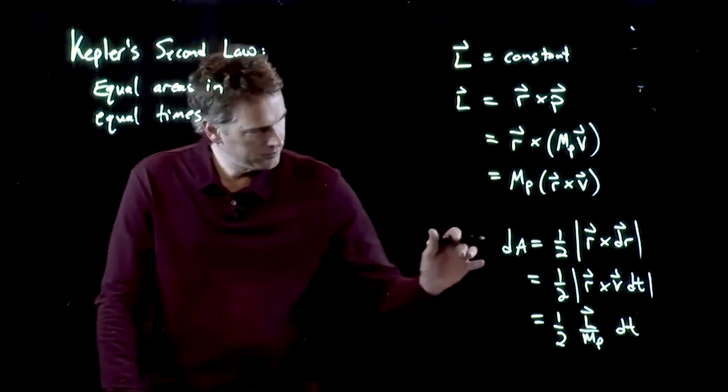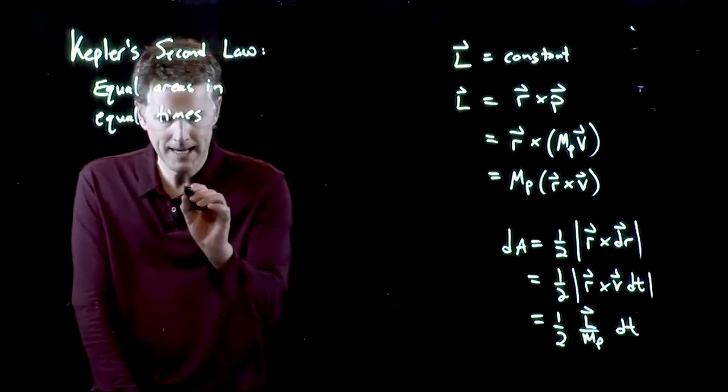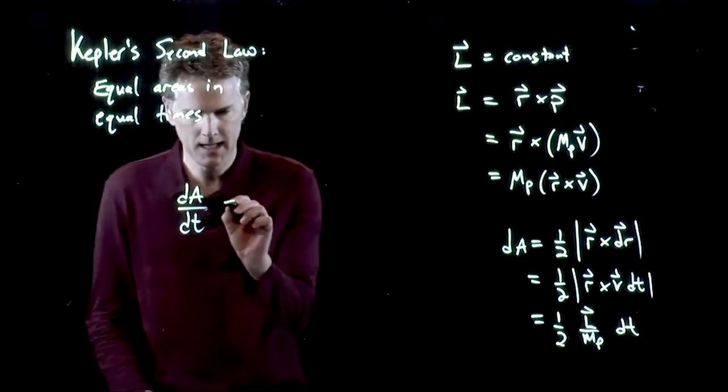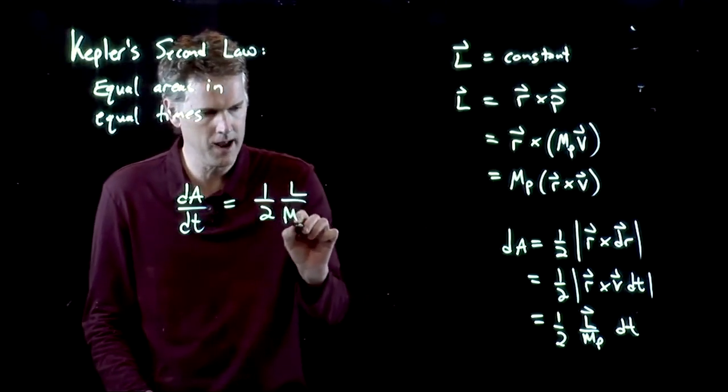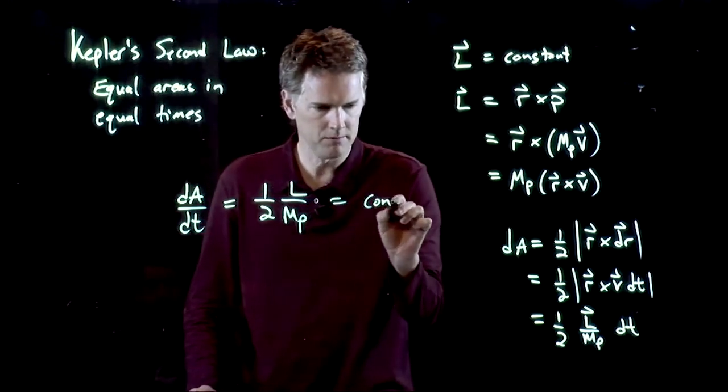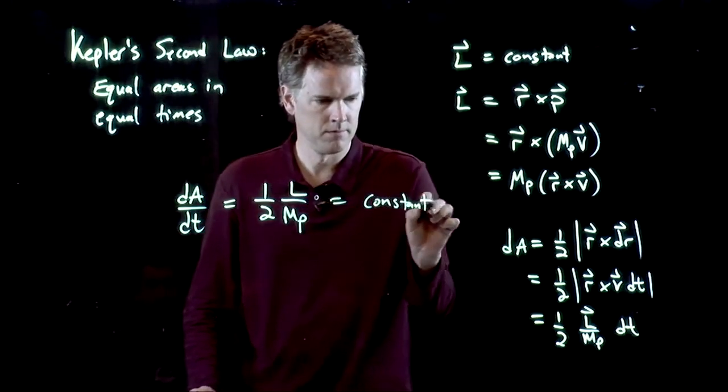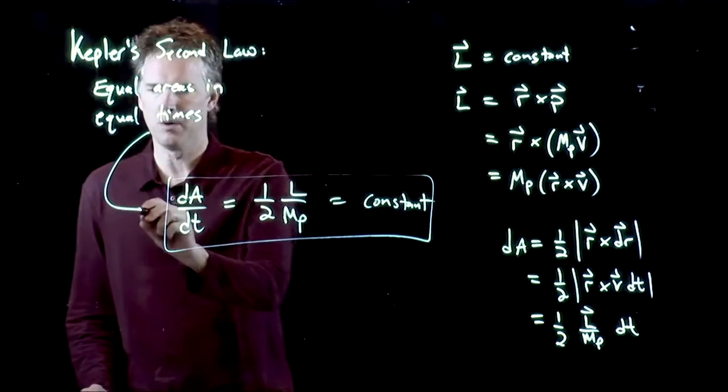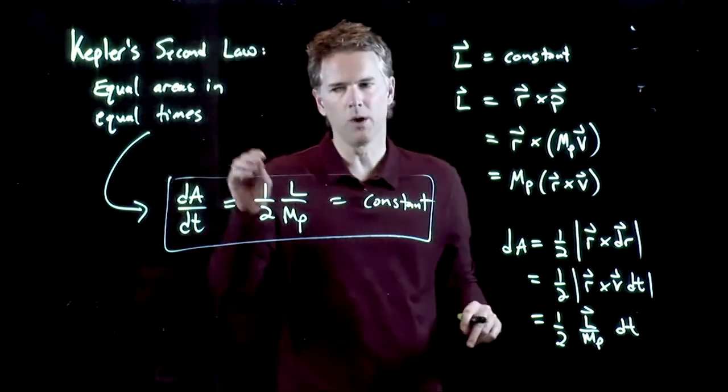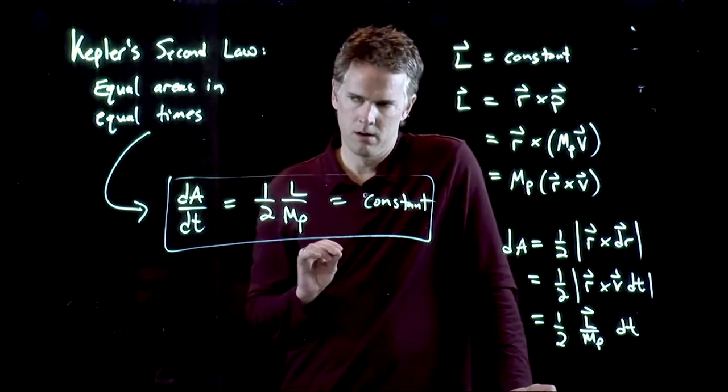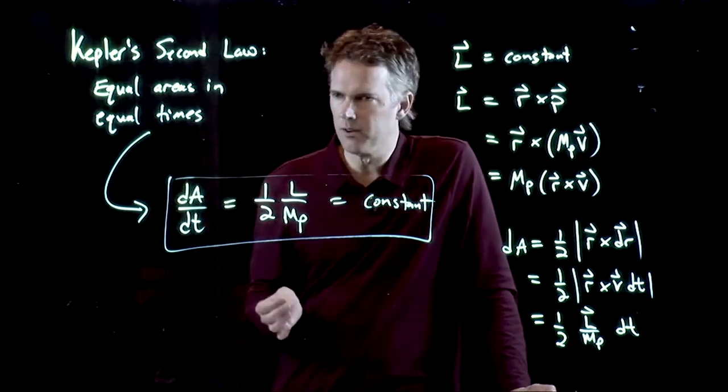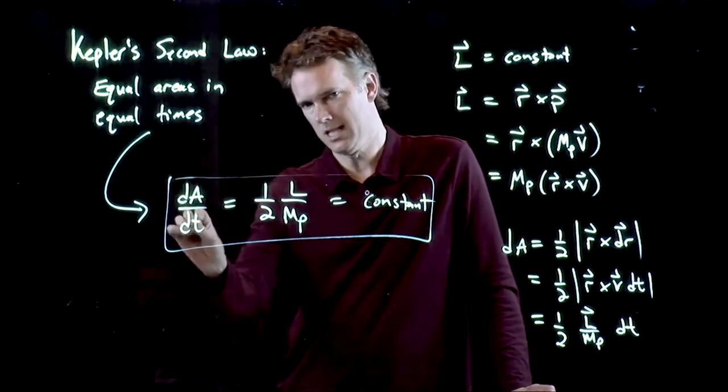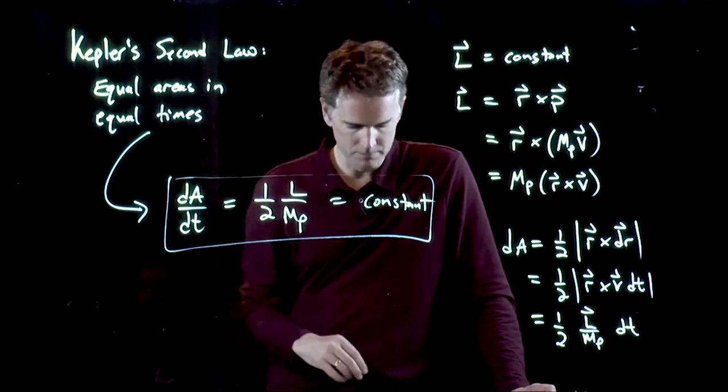So if that is equal to one-half L over MP dt, I can divide by the dt and I get dA/dt is one-half L over MP. And this is a constant. And this is exactly what that statement means. Equal areas in equal times. Okay, when you see dA's and dT's, just think deltas, if you're not comfortable with derivatives, right? dA is really delta A, dT is delta T, just in the limit of small deltas.